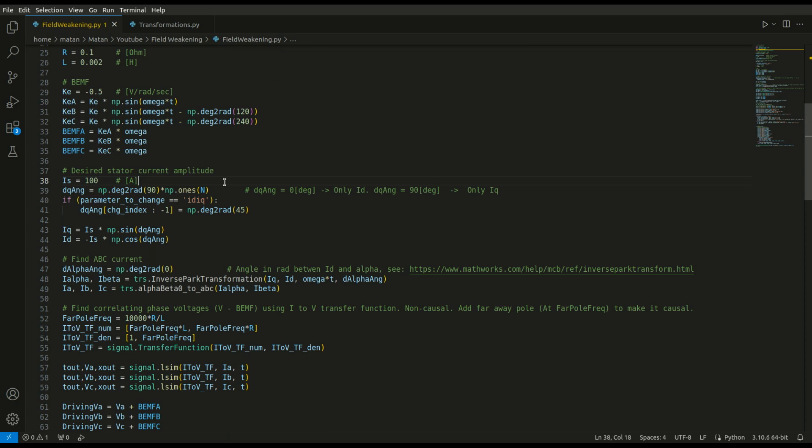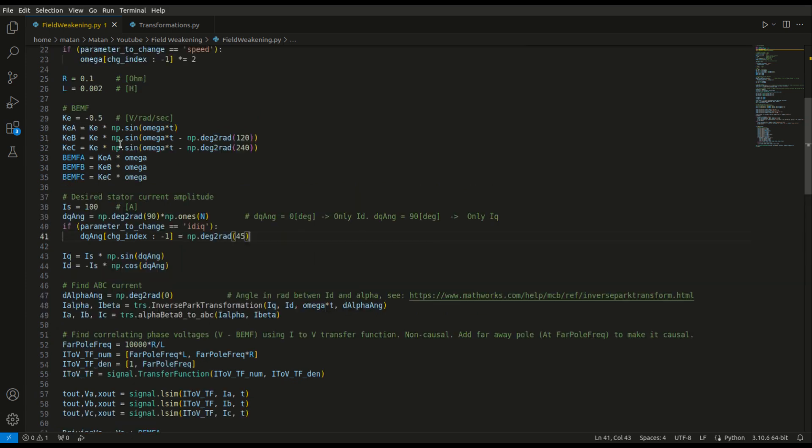For now, I'll assume the stator current vector is entirely in the Q axis, meaning it's perpendicular to the rotor's magnetic flux orientation, and for starters, I'll also ignore the back EMF.